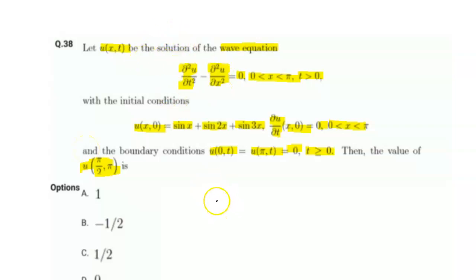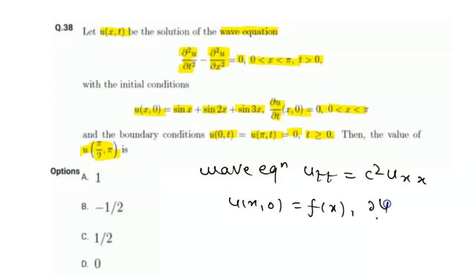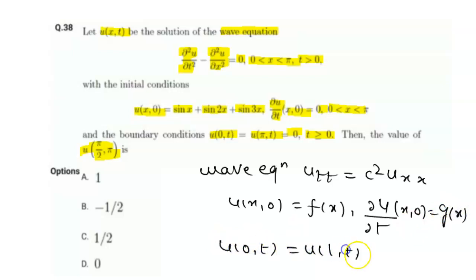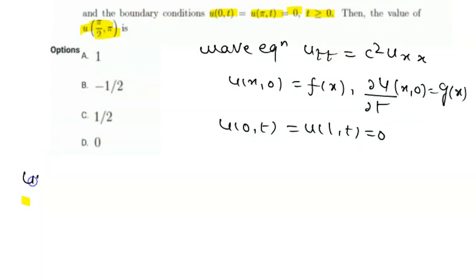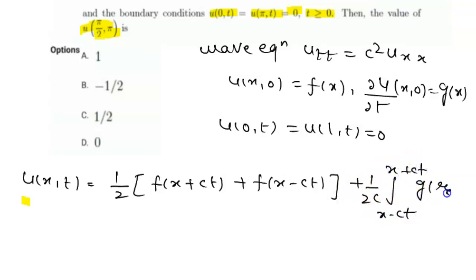Since this is a wave equation, we use D'Alembert's formula. The wave equation u_tt = c² u_xx with u(x,0) = f(x), ∂u/∂t at (x,0) = g(x), and u(0,t) = u(l,t) = 0 gives: u(x,t) = (1/2)[f(x+ct) + f(x−ct)] + (1/2c) ∫ from x−ct to x+ct of g(ξ) dξ.